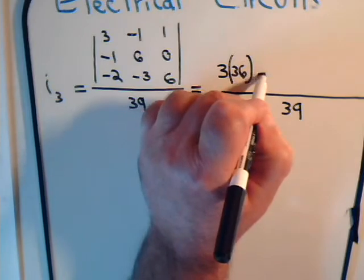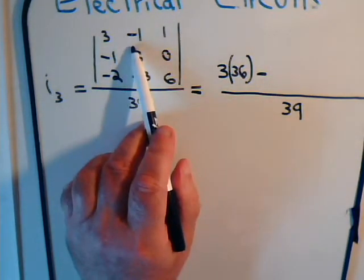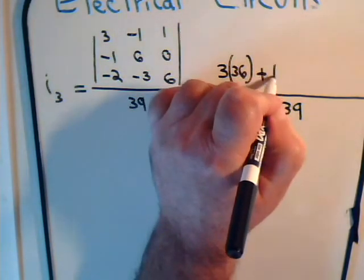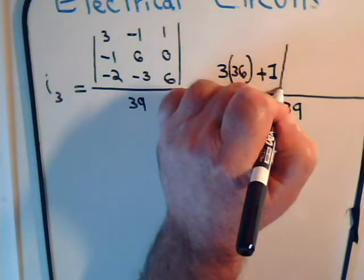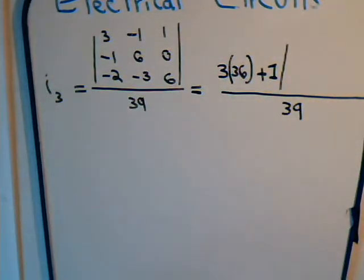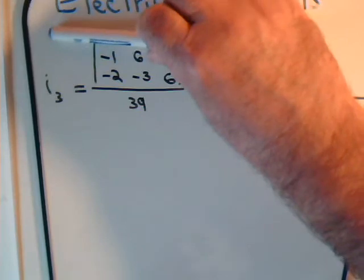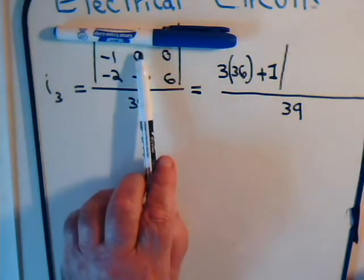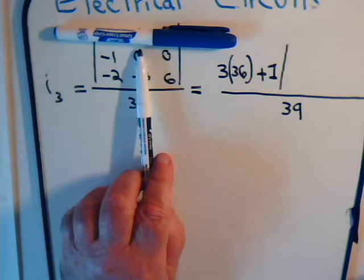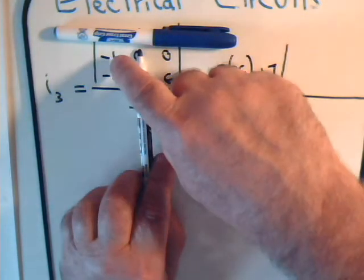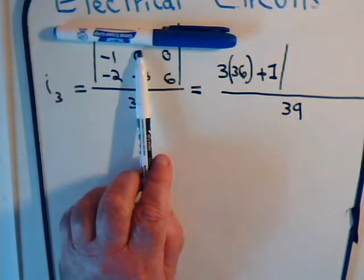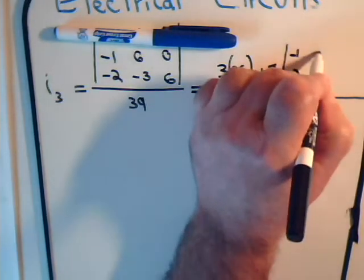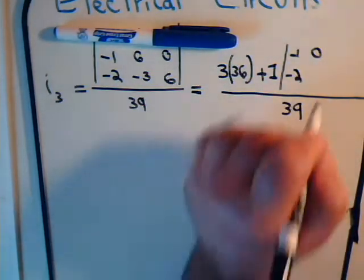Then it's minus this number, which already has a minus sign by it. So this becomes plus 1 times this submatrix. 6. Now we cover up that row, cover up this column, and we have this sub-determinant: negative 1, negative 2, 0, 6. So we have negative 1, negative 2, 0, and plus 6.